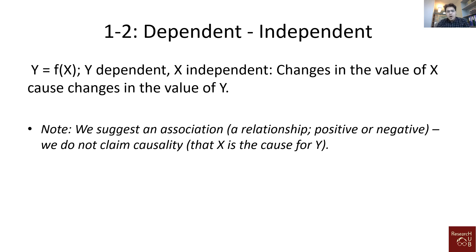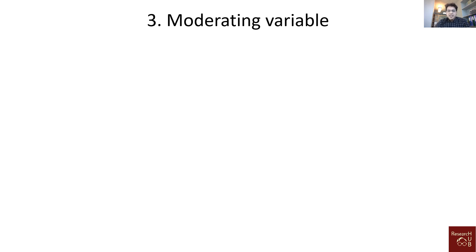Looking at dependent and independent variables: y equals f(x), meaning y is a function of x. Y is the dependent variable which depends on the values of the independent variables. Any change in the values of x causes a change in the values of y. Note that here we are suggesting an association — a relationship, positive or negative — but we do not claim causality. We are just indicating an association between x and y, not causation.